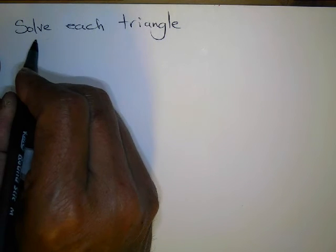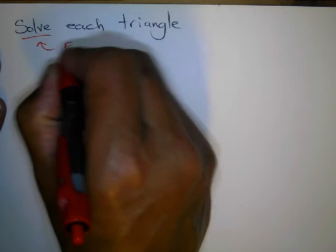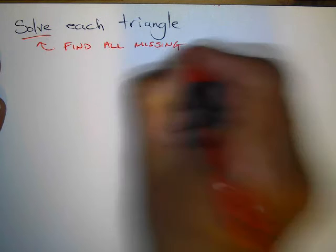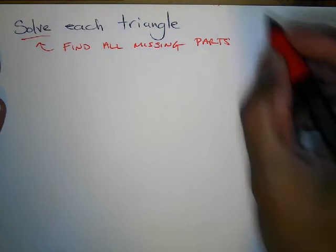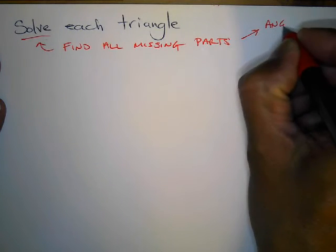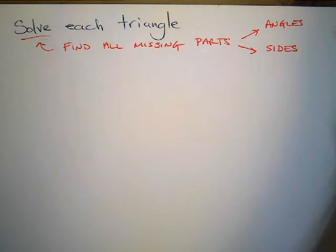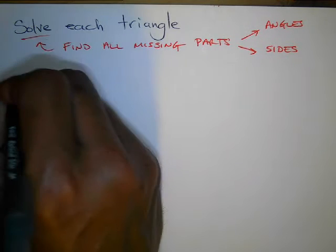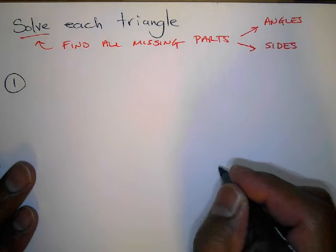All right, so any missing angles, right? Parts, you've got angles and then you've got sides. You've got to make sure you just call them all out, name them all. And that's what it means to solve the triangle. Okay, so we've done this before. Here's number one. As far as math, nothing new. Here's what you're going to see today.